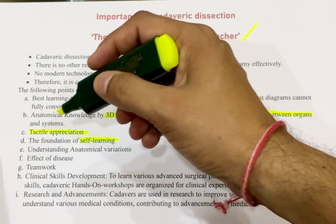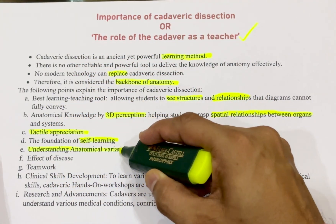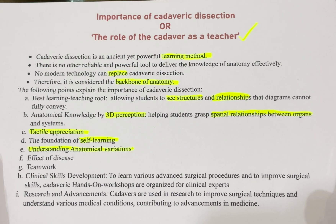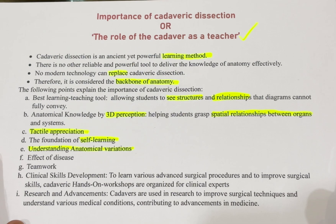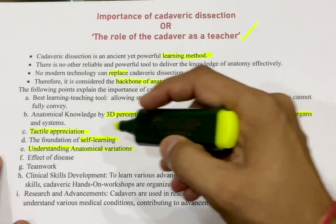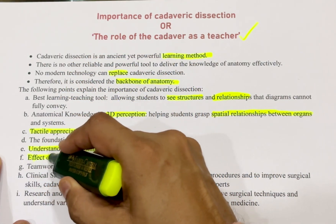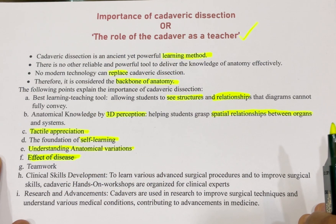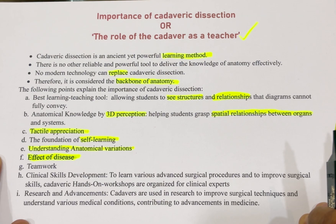Another important point is that cadaveric dissection is helpful in understanding anatomical variations. Variations are not always pathological or abnormal. It is helpful to understand embryology and the development of an organ, and to differentiate whether an anatomical variation will harm or not harm an individual. Sometimes we find cadavers with organs affected by some disease, which helps us appreciate normal features of an organ and compare them with abnormal features of a diseased organ.